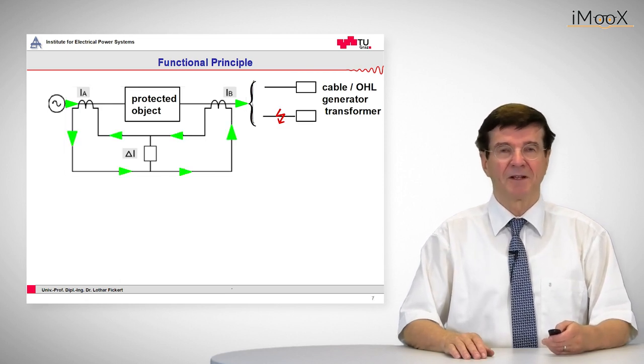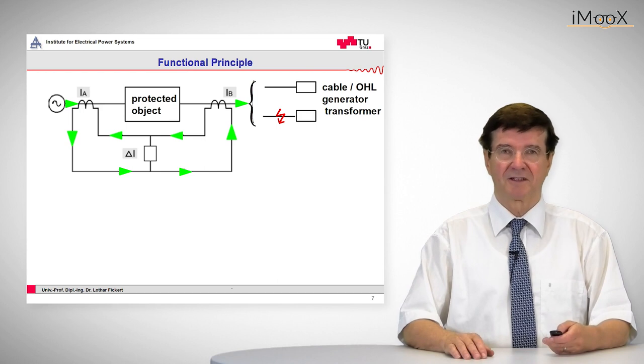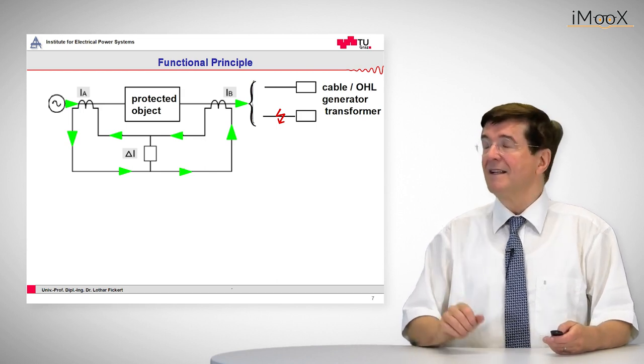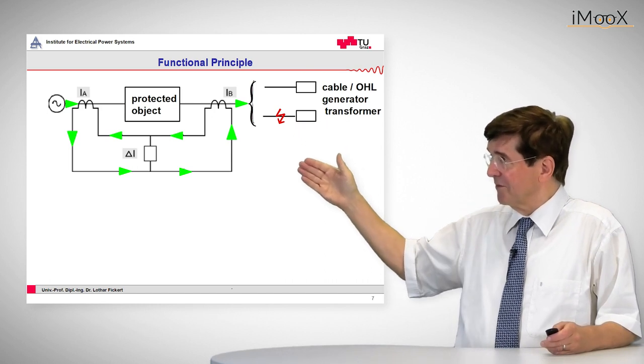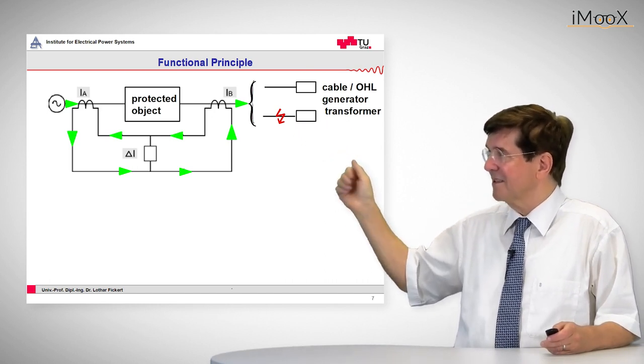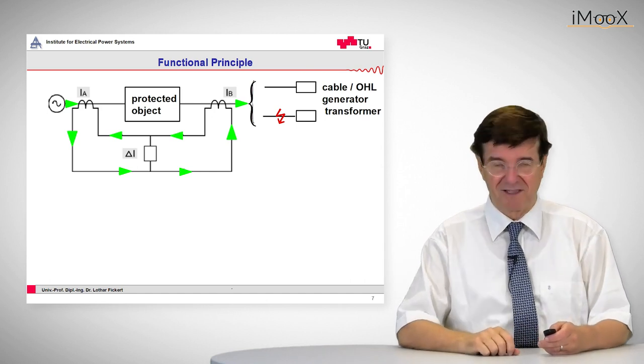The secondary currents are replica of the primary current. And taking the polarity of the current transformers, we see that the current that comes in to the left side is transformed into a secondary current which is the same as the one that leaves the object.